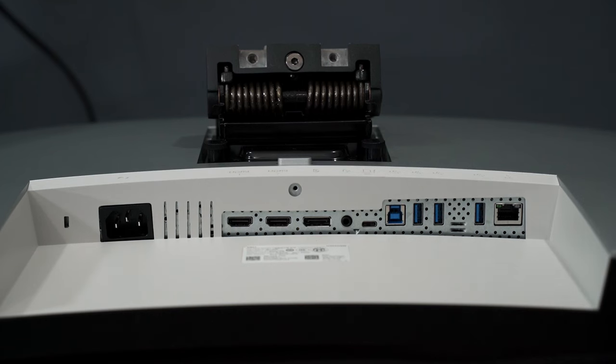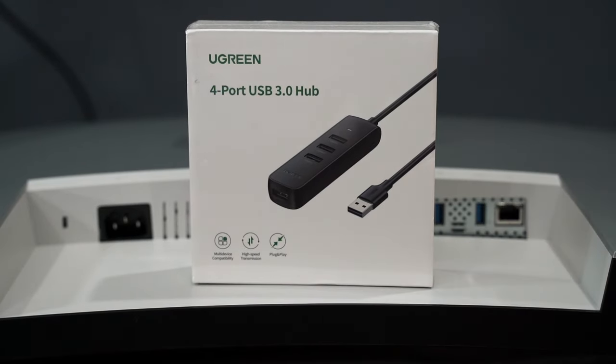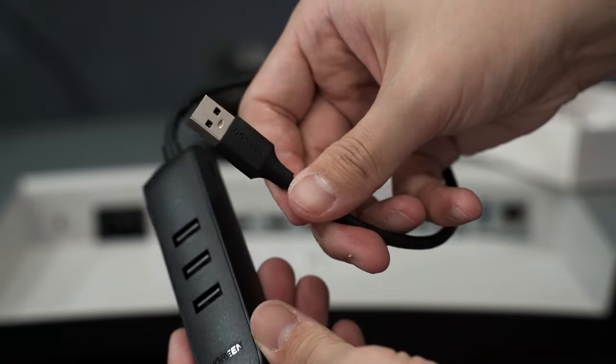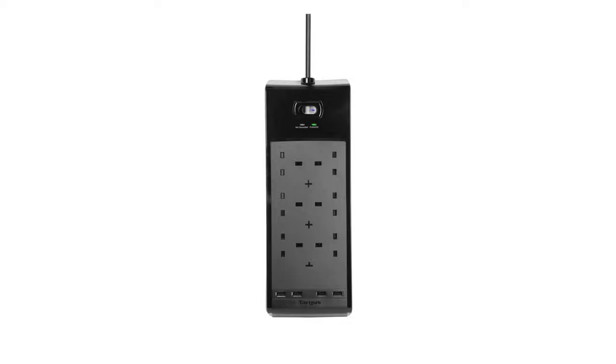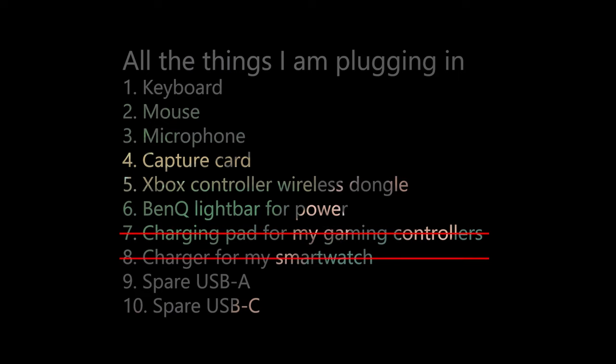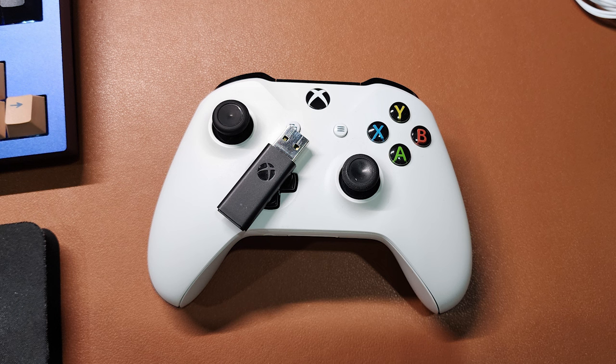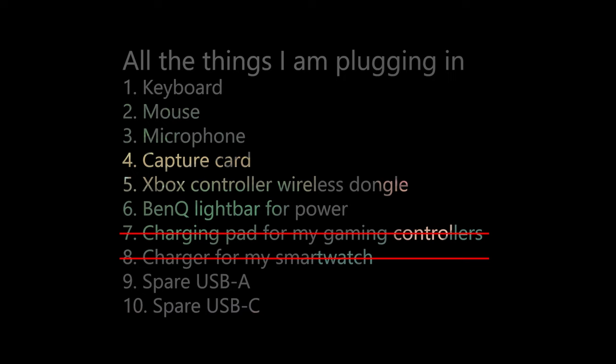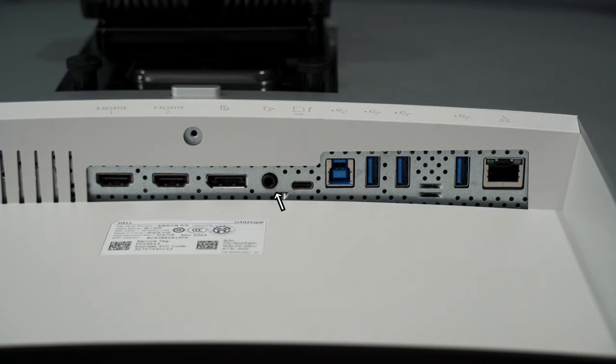So I bought a USB 3.0 hub — I got this one in particular because all ports are 5Gbps in speed and it has one USB Type-A port pointing downwards, which is very useful. I also upgraded the power strip strapped underneath my table to a Targus one with four USB Type-A ports for charging, so I moved items 7 and 8 to that power strip. For the Xbox One controller wireless dongle, I found it's impossible to share via the monitor since macOS does not support the Xbox wireless controller adapter and there are no third-party drivers, so I directly plugged it into the desktop. I also plugged the audio jack from my Edifier S1000 Mark II speakers into the monitor so I can share them between two computers.